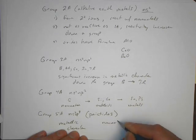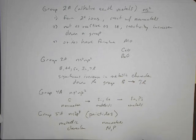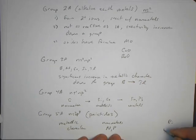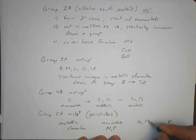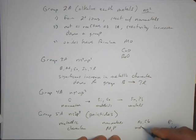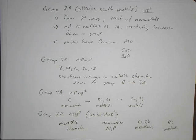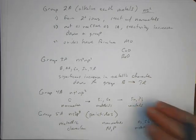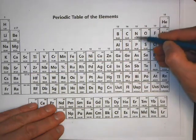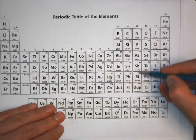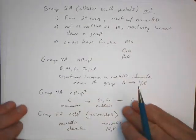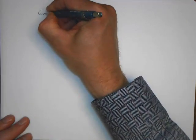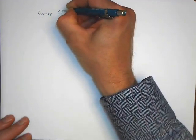We have nonmetals, very clearly nitrogen and phosphorus are nonmetals, to bismuth being a metal, and arsenic and antimony are metalloids. As we go down, we start with nonmetals and become metalloids, and we have a metal there. The pnictogens.